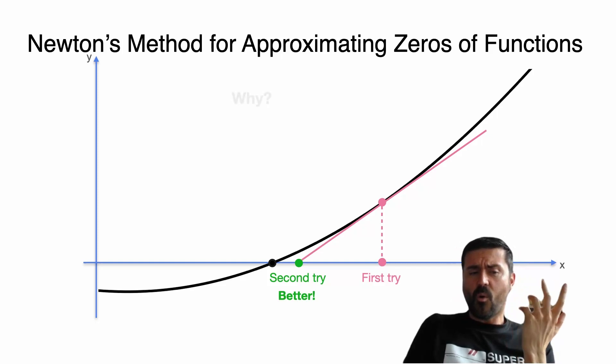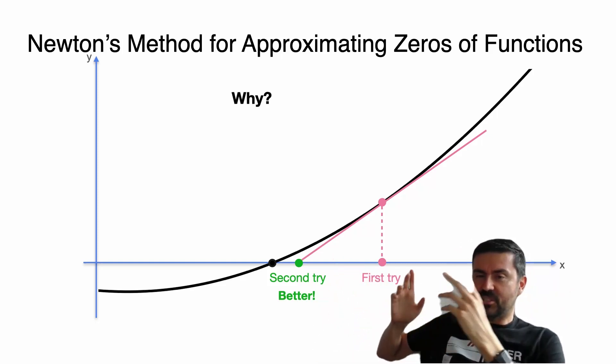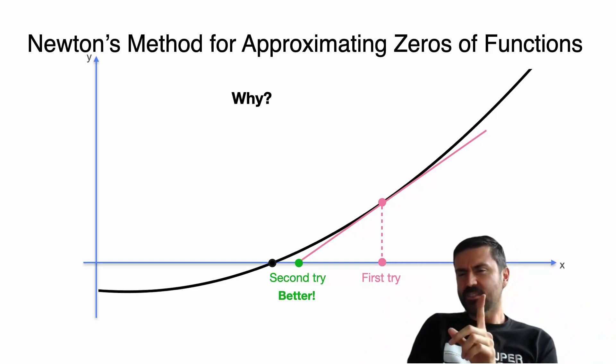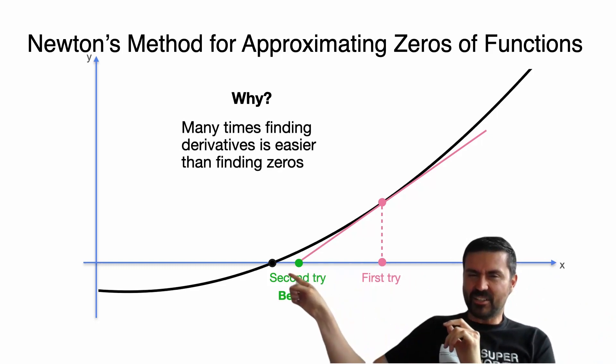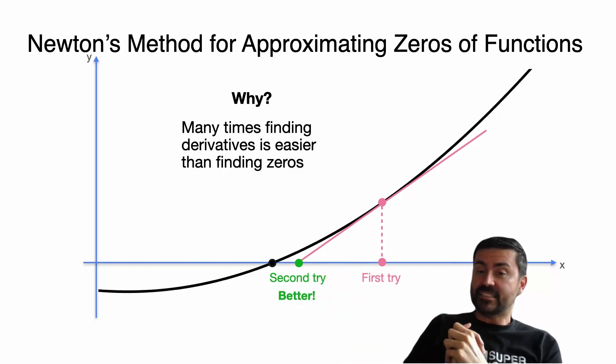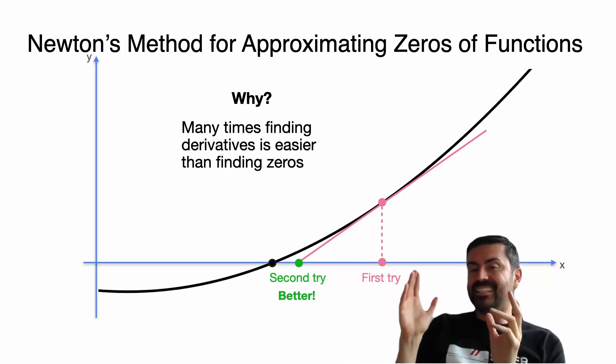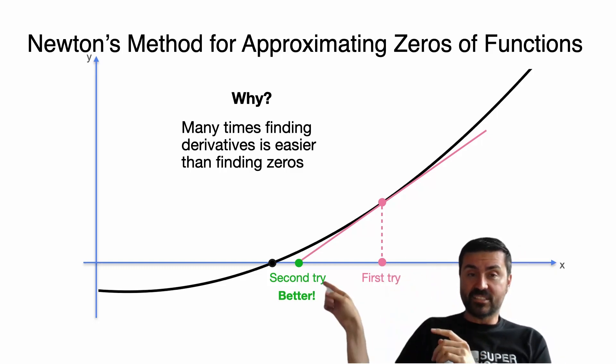Now here's a question: why can't we just calculate that zero? We'd let the function equal zero and solve. We would do that for simple functions, but some functions are complicated and many times this is a very hard equation to solve. But the derivative is very easy to calculate. So Newton's method takes advantage of those cases where you can calculate the derivative easily but not the zero.